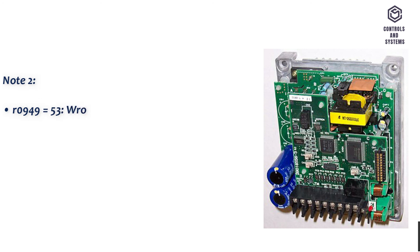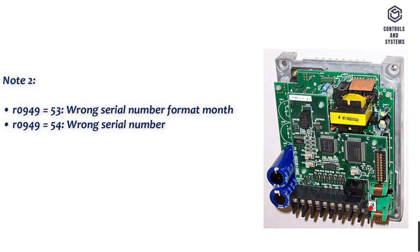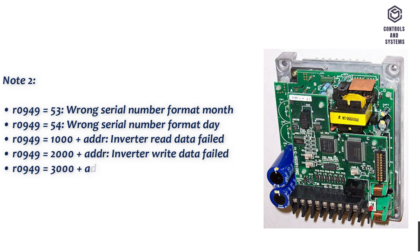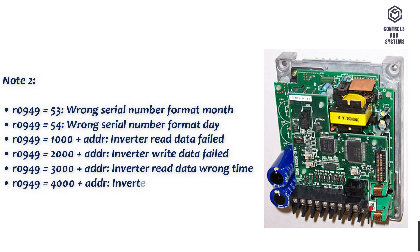R0949 equals 53: wrong serial number format month. R0949 equals 54: wrong serial number format day. R0949 equals 1000 plus address: inverter read data failed. R0949 equals 2000 plus address: inverter write data failed. R0949 equals 3000 plus address: inverter read data wrong time.